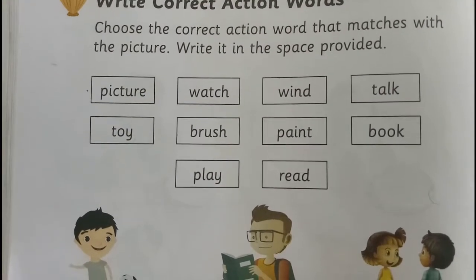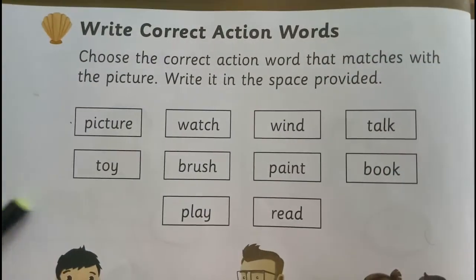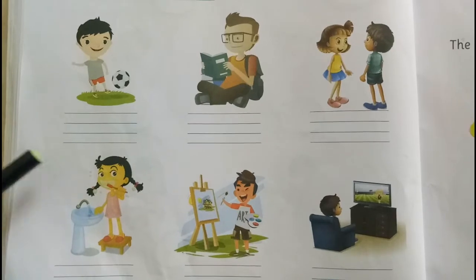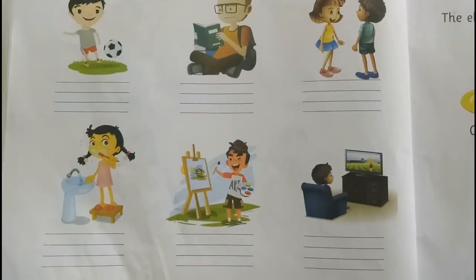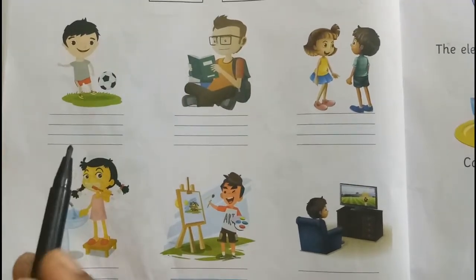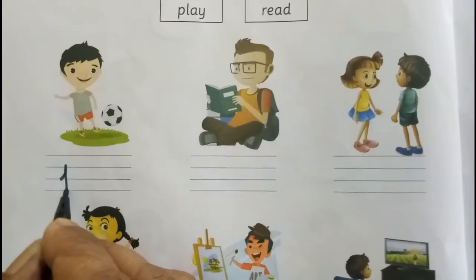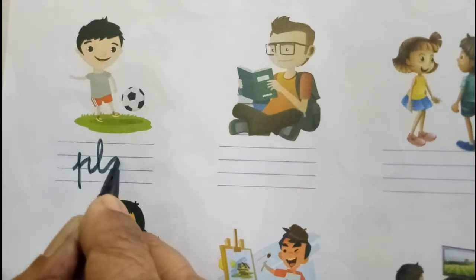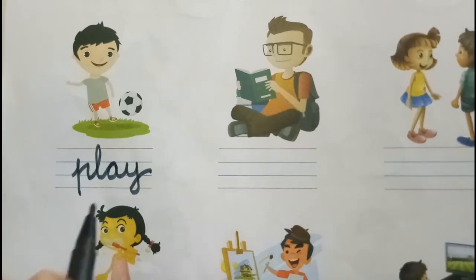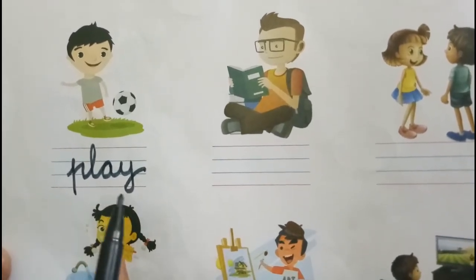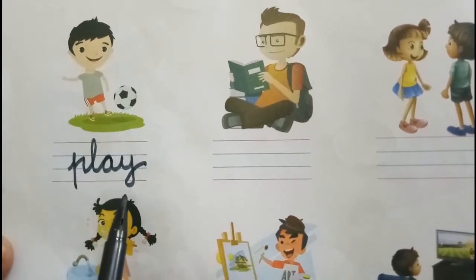Children, this is your book page number 54 — the last book exercise in this lesson. They have given the words in the box. You have to identify the picture first, and under the picture they have given four lines — you have to write in cursive handwriting. In all the book exercises you have to write in cursive handwriting. The first picture is play — you have to write play: P-L-A-Y. Play.